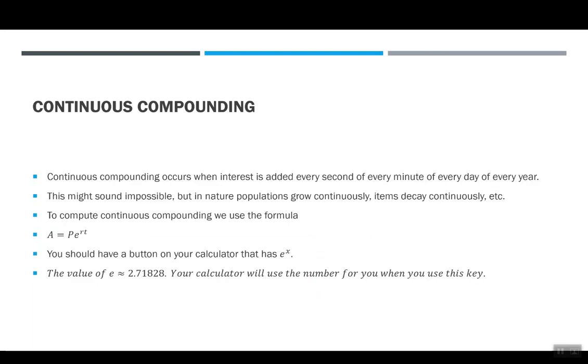There's one more type of compounding that we need to talk about, which is continuous. Continuous compounding occurs when interest is added every second of every minute of every day of every year. This might sound impossible, but in nature, populations grow continuously, items decay continuously, things depreciate continuously, so there are a lot of examples of things that would work that way. May or may not be money, but we're still going to use it just so we can compare how these things work.